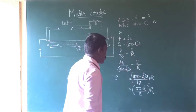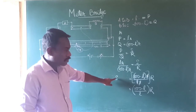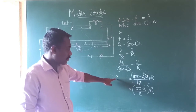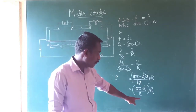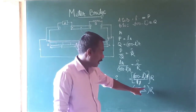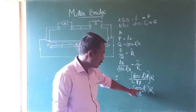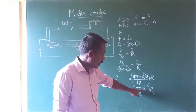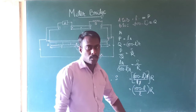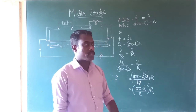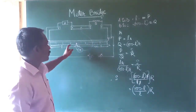This is how we can calculate the unknown resistance S. If we know the length L, (100 minus L), and the known resistance R of the meter bridge, we can determine the unknown resistance using this formula.